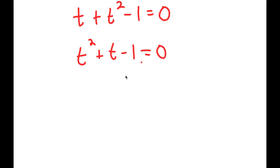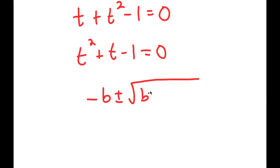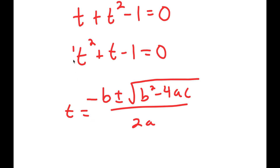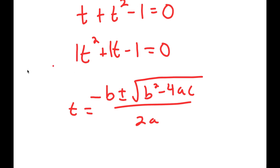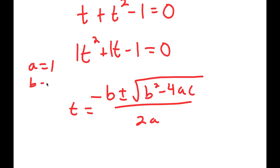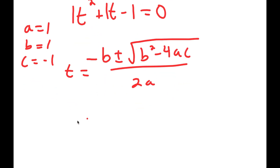To solve this I'm going to use the quadratic formula, which is negative b plus or minus the square root of b squared minus 4ac, all over 2a. In this case, a is 1, b is 1, and c is negative 1.